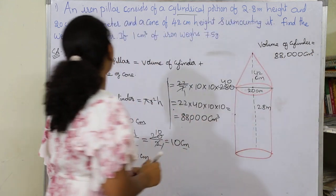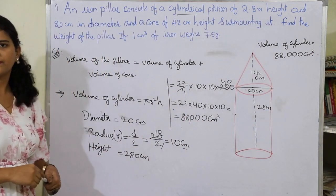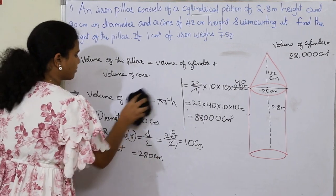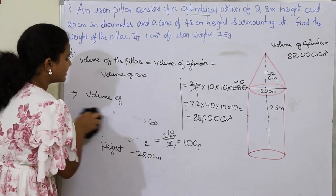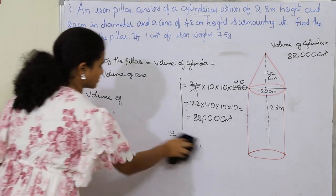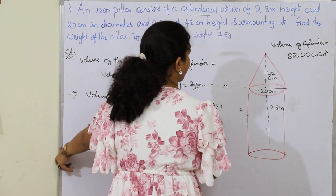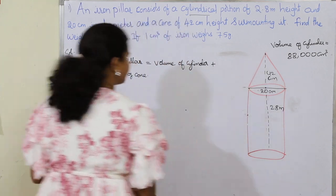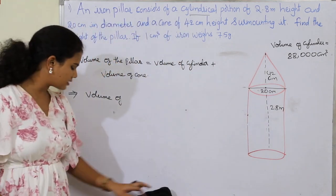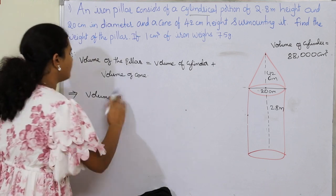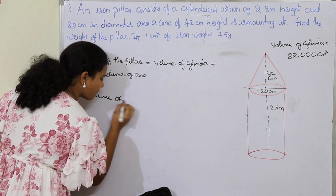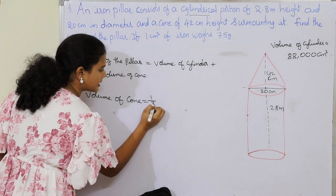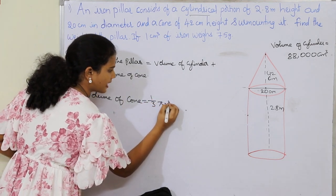Now it's time to find the volume of the cone. The formula for volume of cone is 1/3 πr²h. We have dealt with this formula in previous examples in Exercise 2.2. So volume of cone equals 1/3 πr²h.